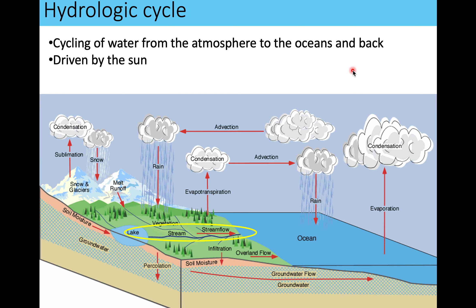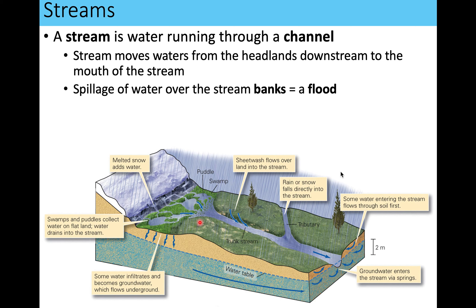It's all driven by the heat from the sun. We are going to focus on streams and stream flow today. A stream is water that is running through a channel — the channel being the path of the stream. The water moves from the headlands, which is kind of the top where the water originates, down to the mouth of the stream.